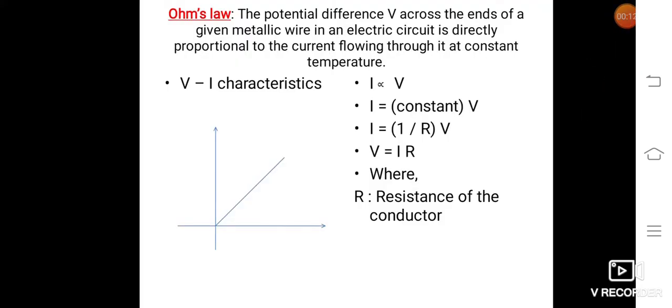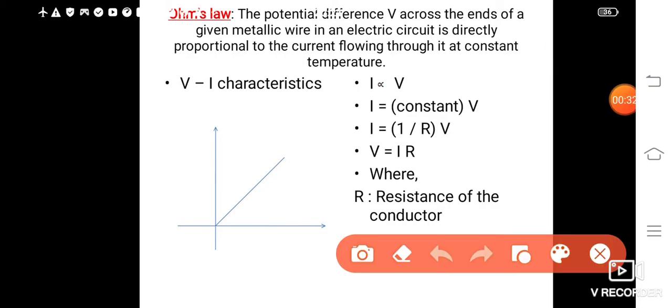What is Ohm's Law? Ohm was a scientist who performed an experiment. From his experimental observations, he found that the potential difference V across the ends of a given metallic wire in an electrical circuit is directly proportional to the current flowing through it at constant temperature.